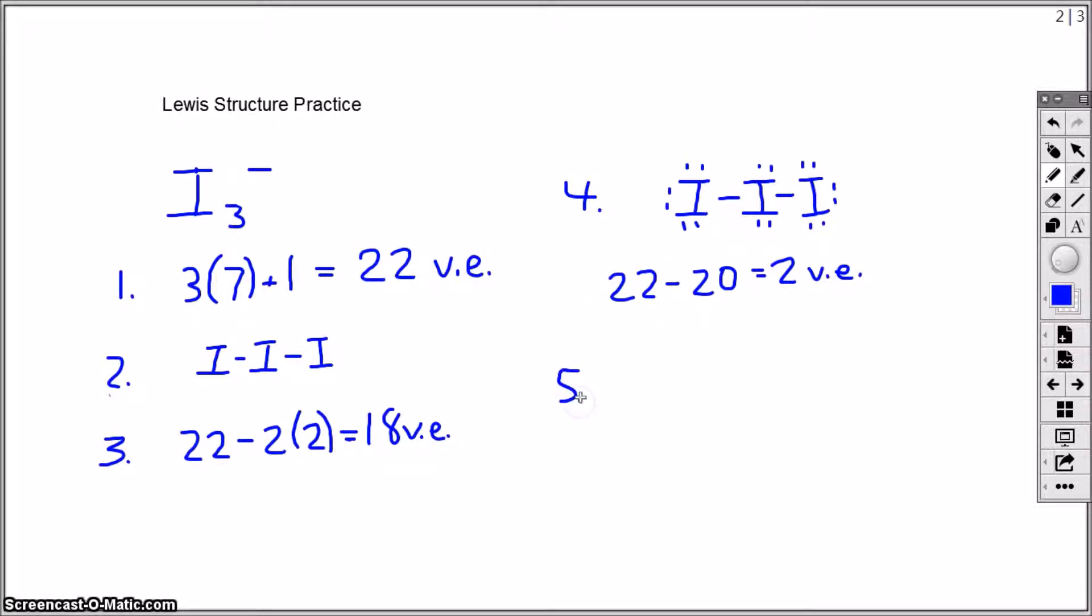So in step five, start with my structure from step four and then give those two additional valence electrons to that central iodine atom. So now the central iodine atom currently has formally ten valence electrons. It can exceed the octet rule because it's in period three or higher. So the structure I'm left with after step 5B is a perfectly valid structure for the triiodide ion.